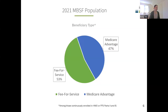I created this pie chart using the 2021 MBSF. Here you can see the breakout split between the fee-for-service and Medicare Advantage populations — they're almost split in half. 47% of members in 2021 were enrolled in Medicare Advantage, and since 2021 it has grown to over 50%. As this population has grown, you can see how it becomes more important to understand encounter data so researchers can do good work and do more research on Medicare Advantage.